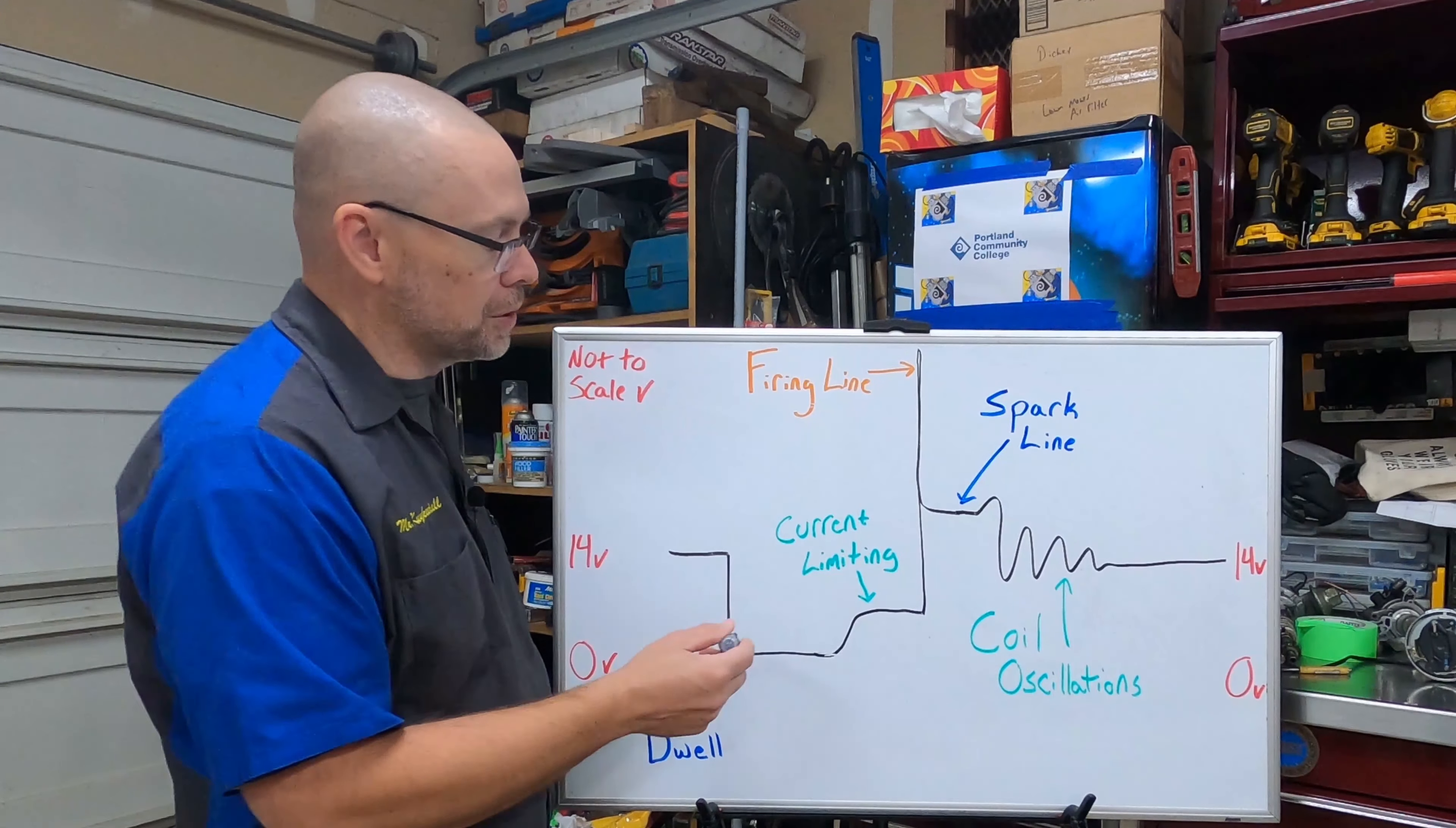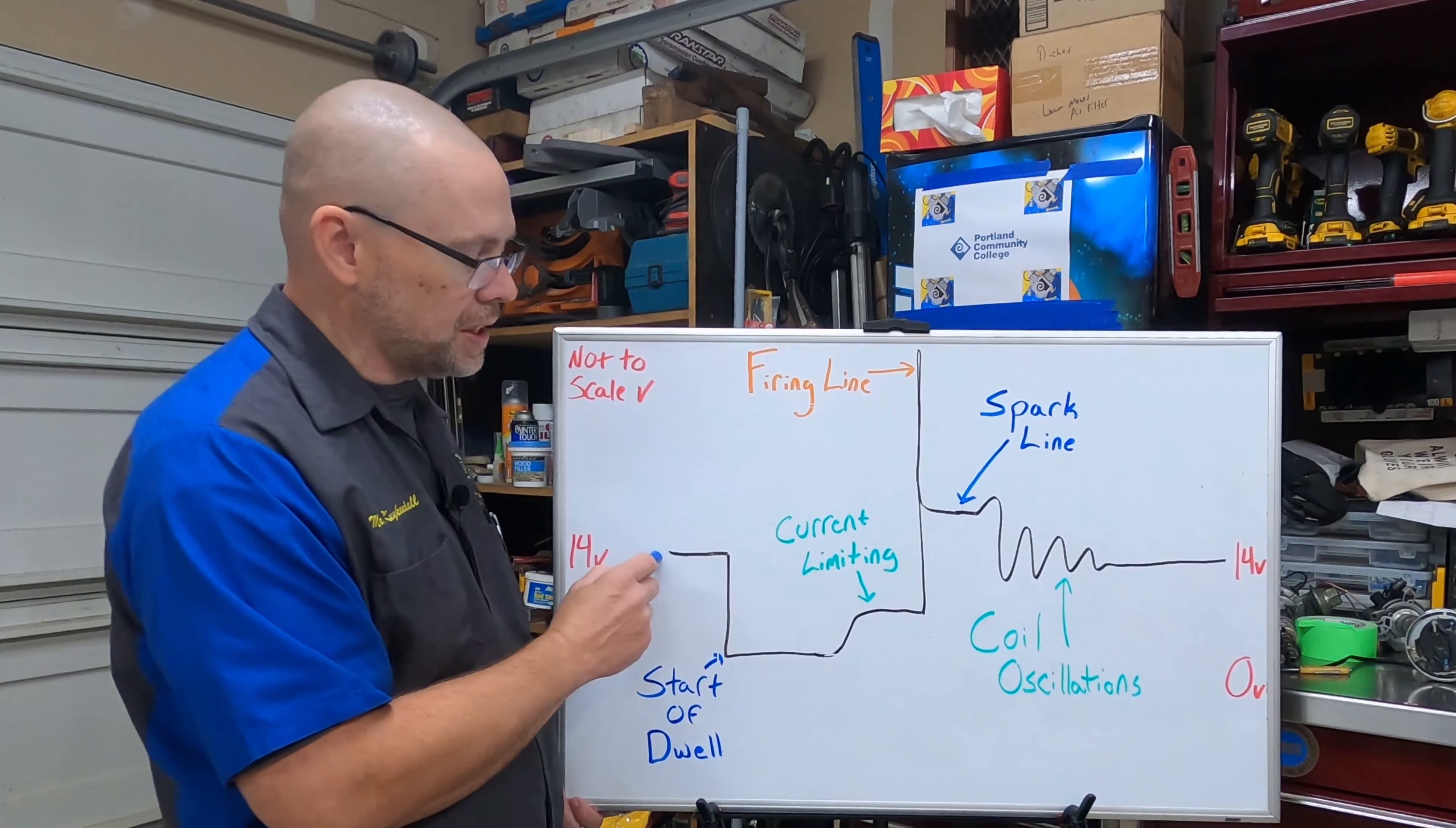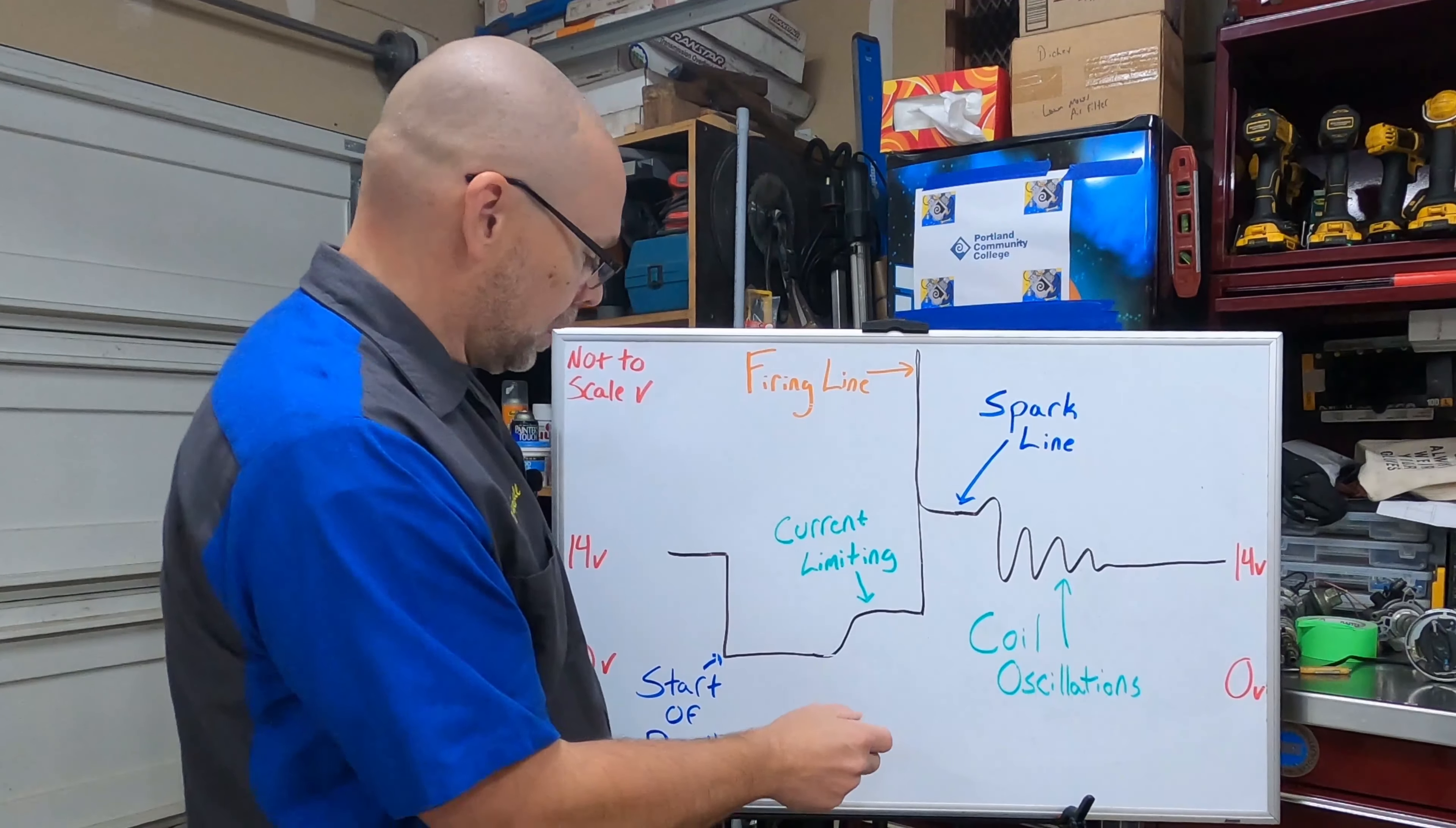So we'll use a lower resistance ignition coil and there'll be some electronics somewhere, not in the coil itself but either in an ignition control module or a powertrain control module. Whatever's running that primary circuit will have some circuitry built into it to limit the current flow. So we're going to hold near zero and then when current limiting kicks up you'll see it rise up. You'll notice it doesn't go back to 14, so we have a volt drop here. It's not zero, it's not 14, which means we still have current flowing.